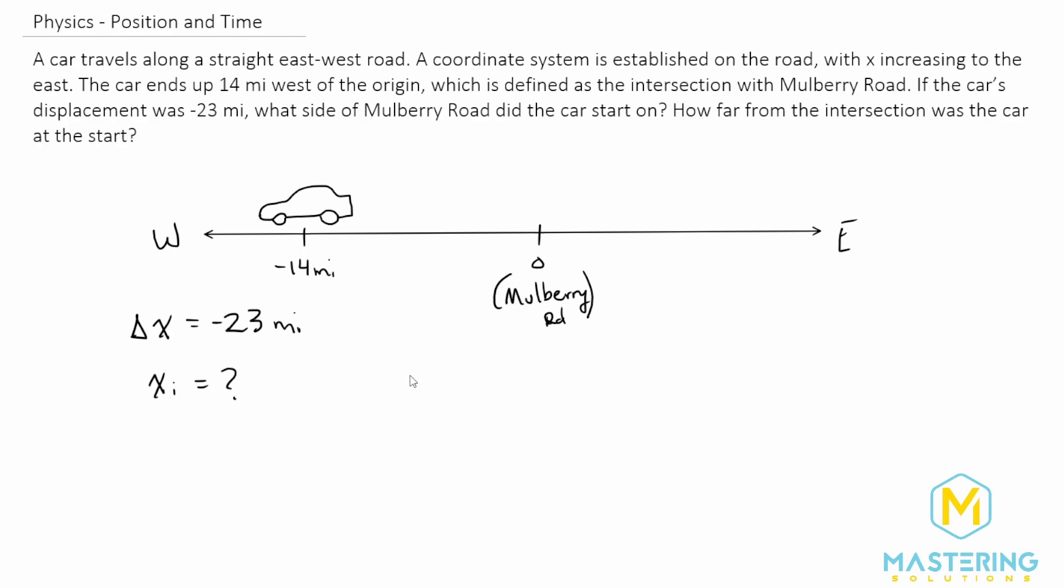We know that displacement equals Δx. Delta anything is always final minus initial, so Δx equals x final minus x initial. We need to find x initial.